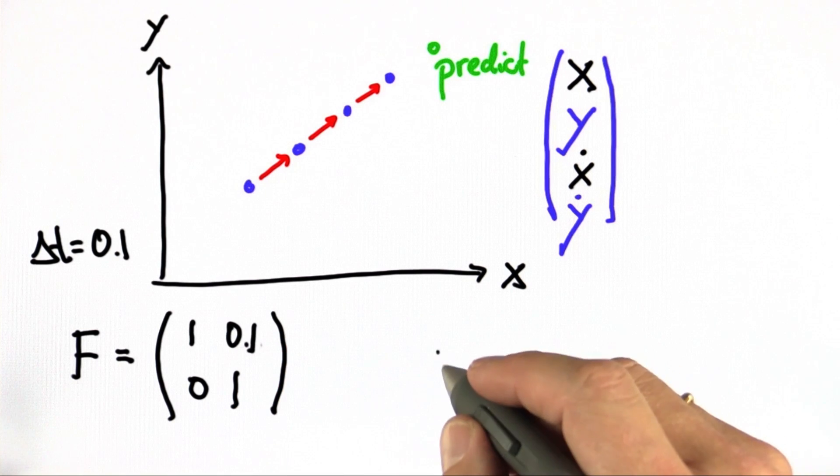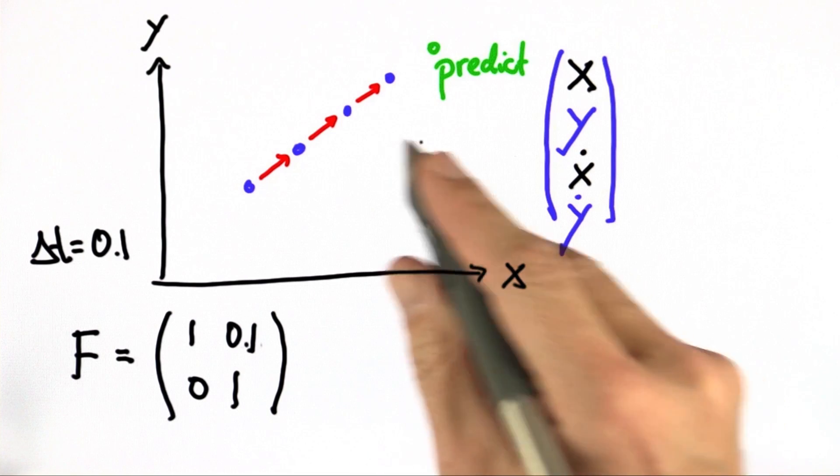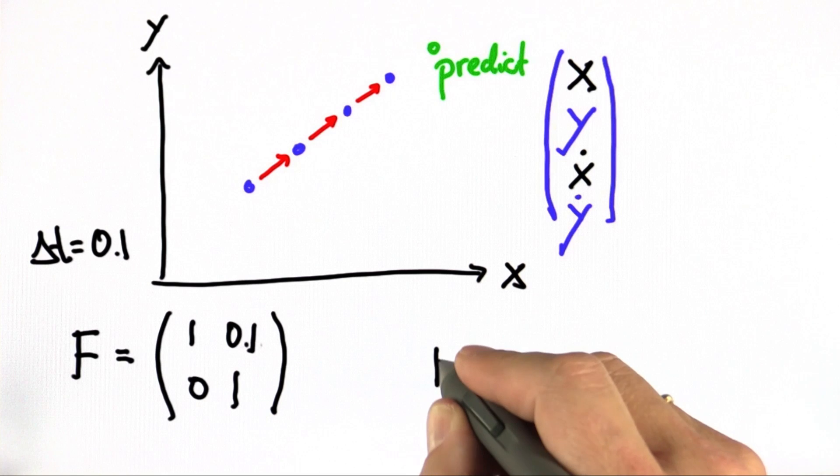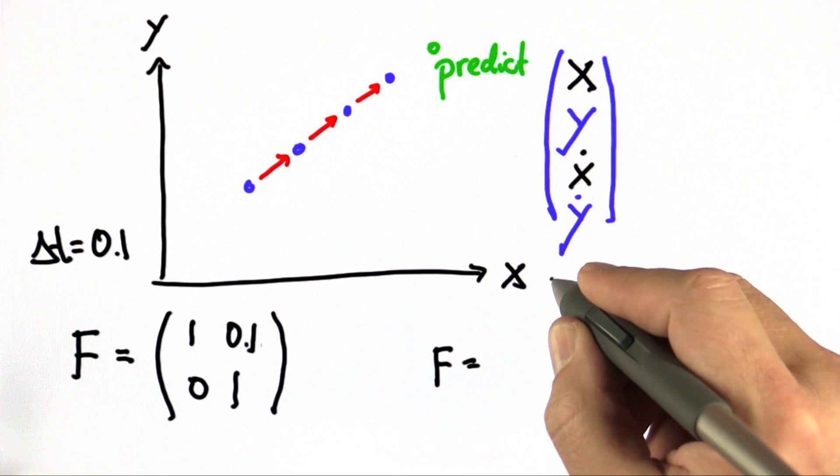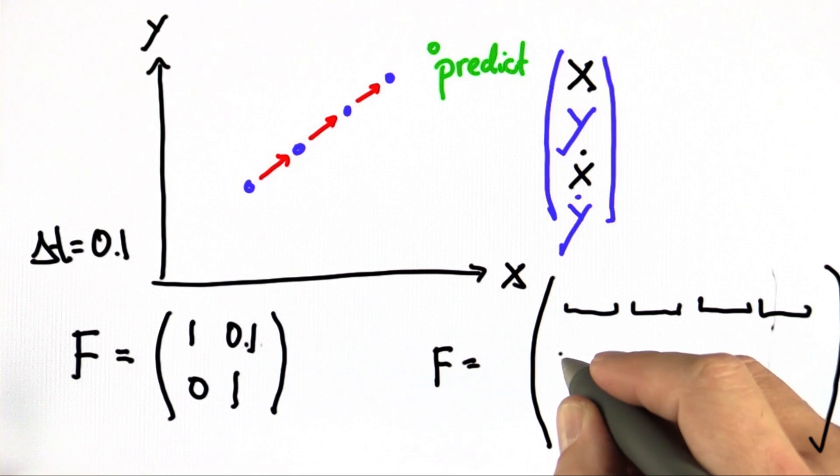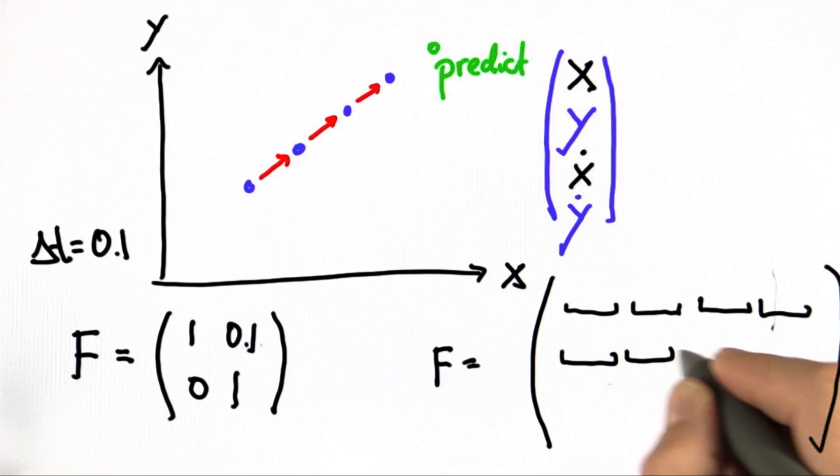Now I want to know from you, for this new 2D case with a four-dimensional state vector, what is the new F? This is a 4 by 4 matrix, so I want you to fill in all of those values.